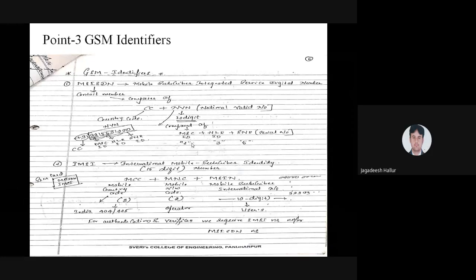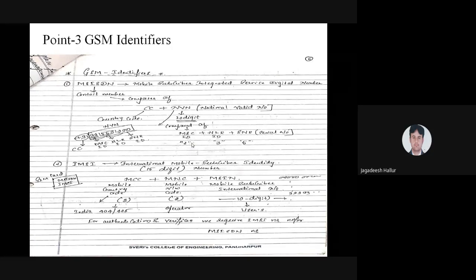The second identifier is IMSI — International Mobile Subscriber Identity. Both MSISDN and IMSI are present in your SIM card. MSISDN is a 10-digit number. IMSI is a 15-digit number. It is defined as MCC — Mobile Country Code — plus MNC — Mobile Network Code — plus MSIN — Mobile Subscriber International Number, which is your 10-digit mobile number.